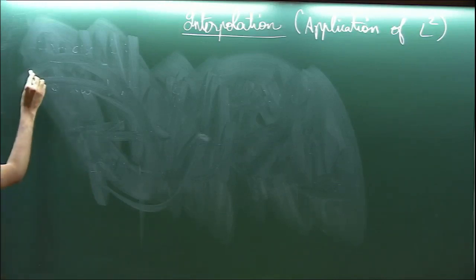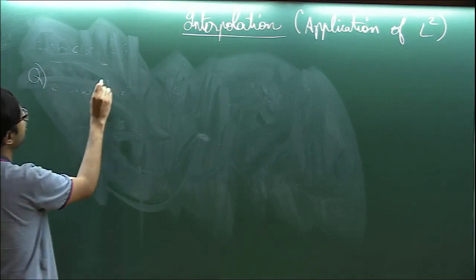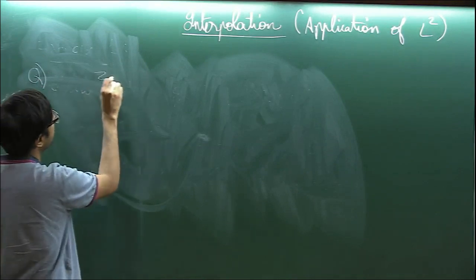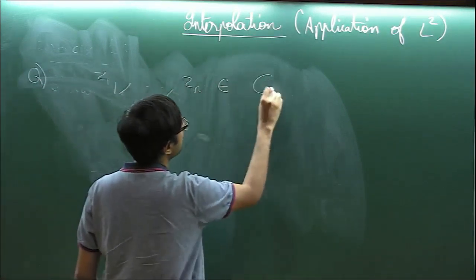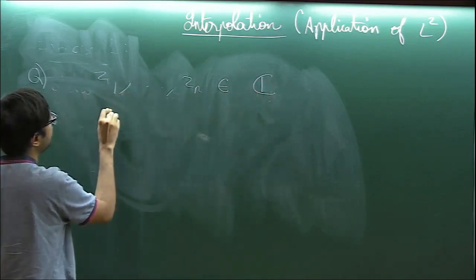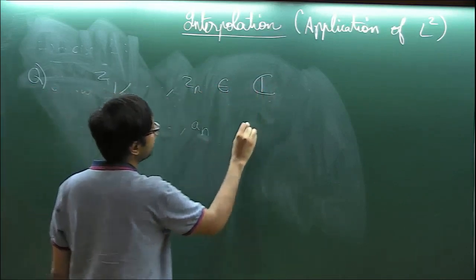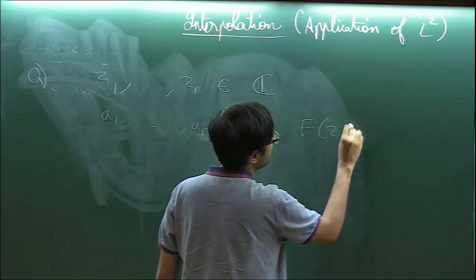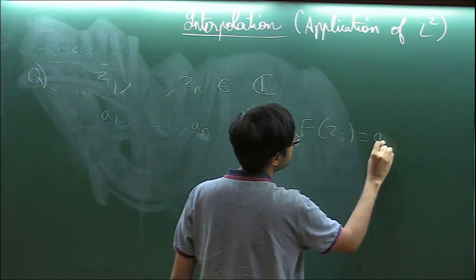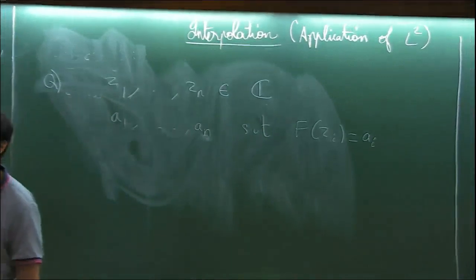Here is one very trivial question. If I give you a bunch of points in C and a bunch of complex numbers, find an entire function so that this happens. This is trivial, right? You just choose a polynomial of a large enough degree.